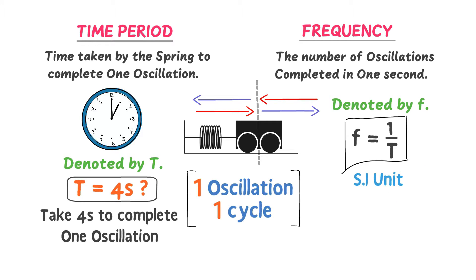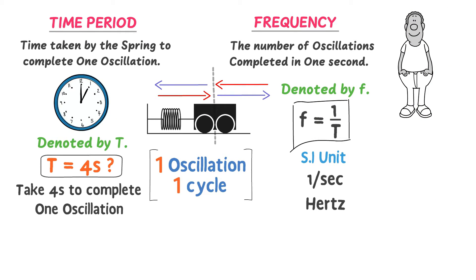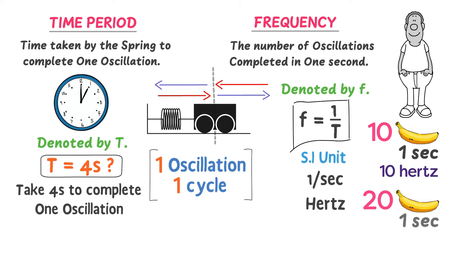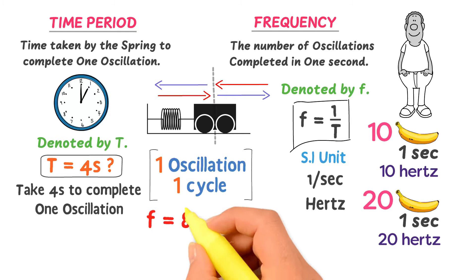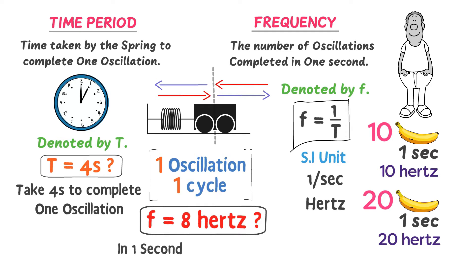The SI unit of frequency is per second, or hertz. For example, if Mr. John eats 10 bananas in one second, then his banana-eating frequency is 10 hertz. If the frequency of this spring is 8 hertz, it means that in one second, this mass completes 8 oscillations.